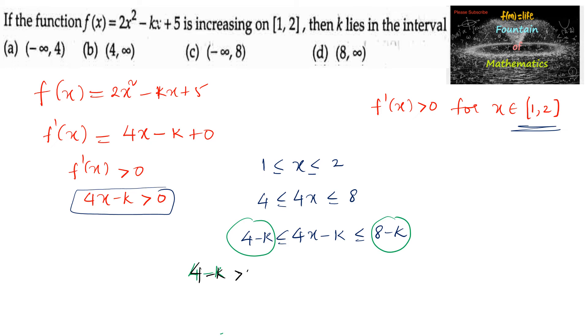4 - k > 0 and 8 - k > 0, that is k - 4 < 0 and k - 8 < 0. So k < 4 and k < 8. From both we can combine: the common solution is k < 4.